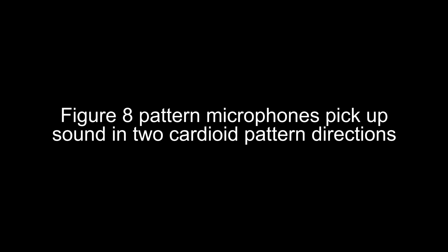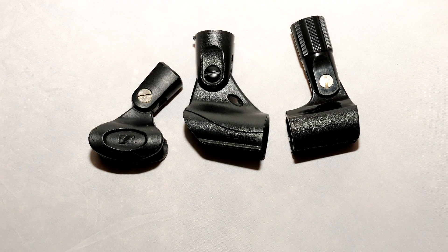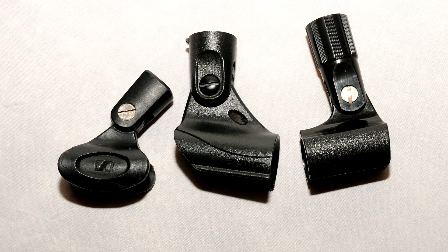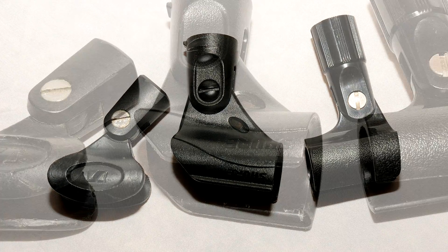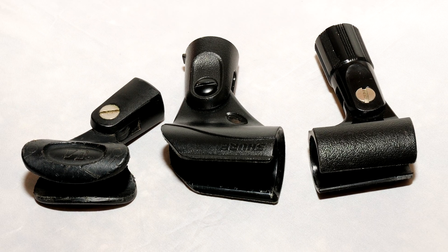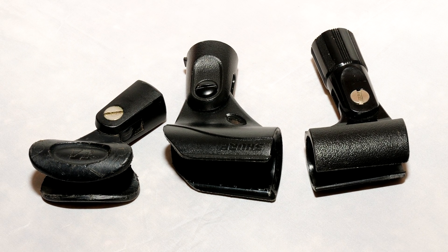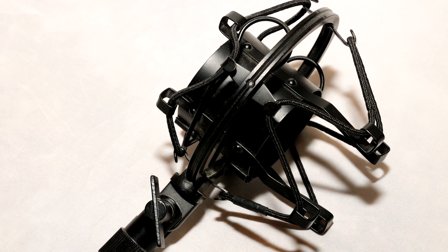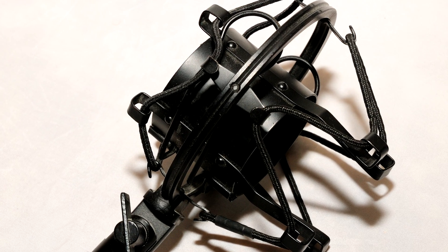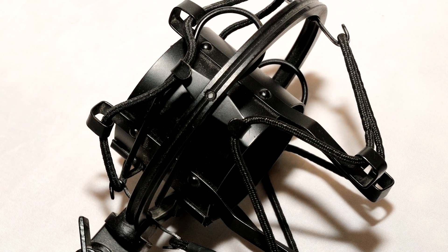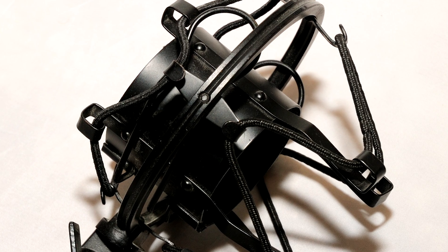Figure eight picks up sound in front and in back of the capsule. The most common accessory you'll run into is the microphone clip, which is where you mount your microphone so it can be mounted onto a stand. Another form of a clip is called a shock mount, which is a more advanced and better form of mounting.